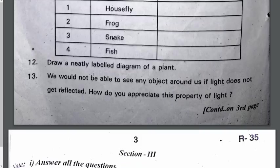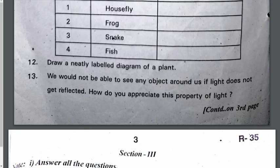Draw a neat labelled diagram of a plant. You all know how to draw a plant — draw it. For the next question: you would not be able to see any object around us if light does not get reflected. How do you appreciate this property of light? When light reflects, it enters our eye and in the retina the image of the object is formed, so we are able to see the objects around us.